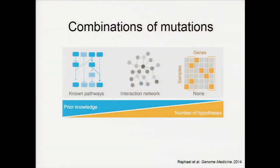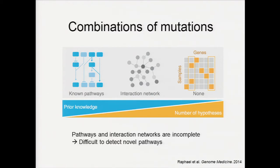To test the combination of mutations, there are several approaches that vary in terms of the prior knowledge they use. You can either test the enrichment of mutated genes in known pathways, or identify significantly mutated subnetworks in large-scale PPI networks. However, such prior knowledge is incomplete, making it very difficult to detect novel pathways. In today's talk, I will mainly focus on the approach that uses no prior knowledge and de novo identifies the combination of driver mutations.